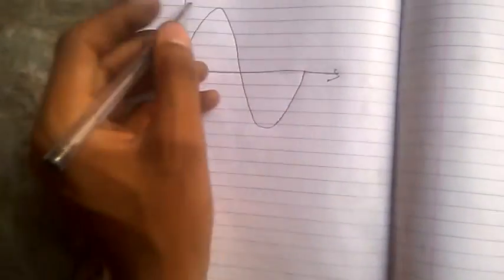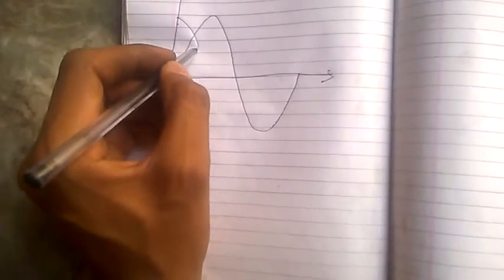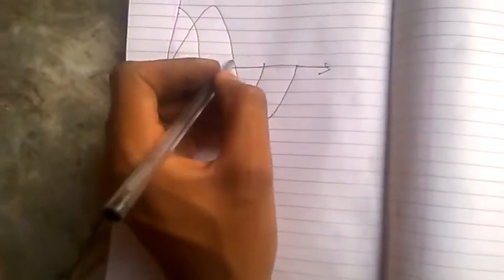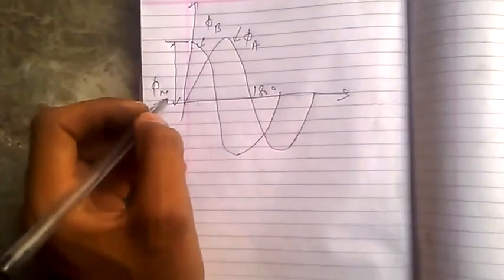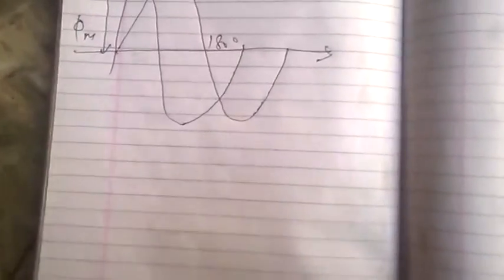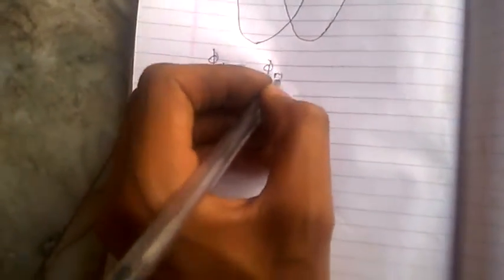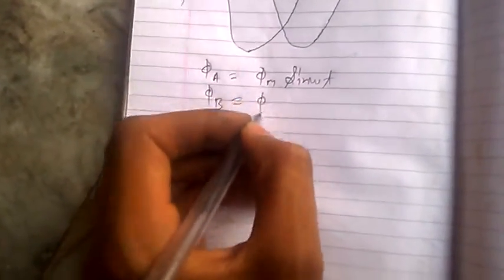So look at this - the two windings produce their own flux which are 90 degrees displaced in time. Considering that's phi b and that's phi a and that's phi m, the resultant of both. So the fluxes of both the windings are displaced 90 degrees in space from each other. Now phi a is phi m sine omega t, and phi b is phi m sine omega t plus 90 degrees.